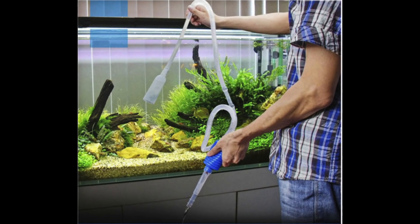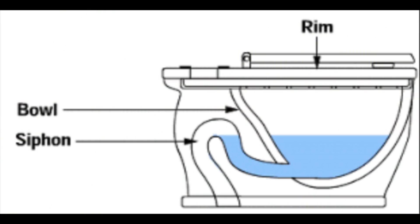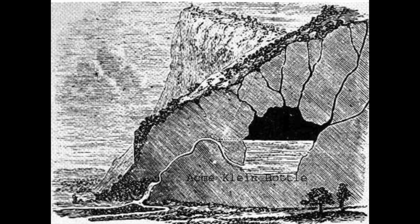We find that siphons have all sorts of uses. For example, you could use one for aquariums, for irrigating crops, for flushing a toilet. Siphons can even be found in nature.